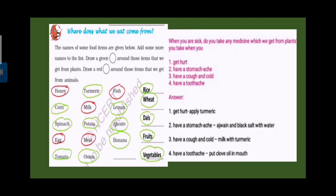When you are sick do you take any medicine which we get from plants? For example, get hurt. Turmeric. Turmeric milk. Milk is coming and when you add turmeric milk, have a stomachache. Have a cold.